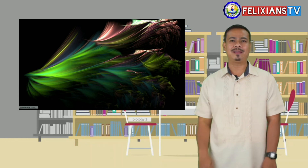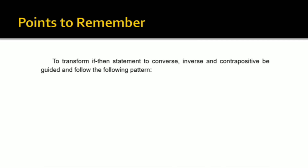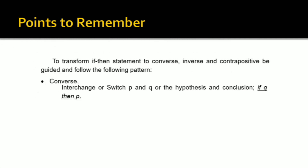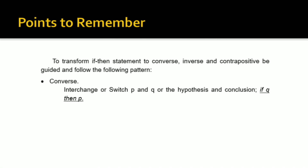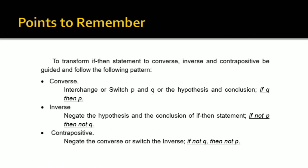And now, let's go to our essential notes — the points to remember. To transform an if-then statement to converse, inverse, and contrapositive, follow this pattern. For converse: interchange or switch P and Q — the hypothesis and conclusion — so we have if Q, then P. For inverse: negate the hypothesis and conclusion of the if-then statement, giving us if not P, then not Q. For contrapositive: negate the converse or switch the inverse, giving us if not Q, then not P.